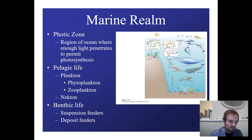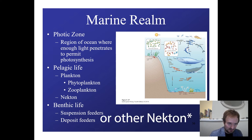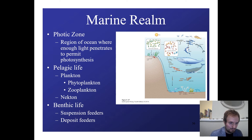Near shore, you have barrier islands, marshes, and epicontinental seas — all things that if found in the rock record tell us about how the Earth was organized. In the ocean, you have two types of life: pelagic life, which moves around in the water, and benthic life. Plankton cannot control where they move — they move with the currents. There are phytoplankton, which are photosynthesizing, and zooplankton, which are consumers. Nekton are anything that can swim against the current — the fauna of the oceans that can actively swim. Benthic life are basically bottom feeders and suspension feeders.